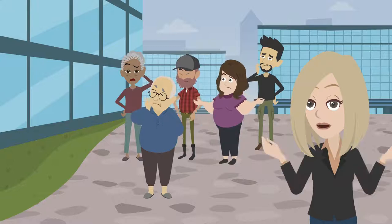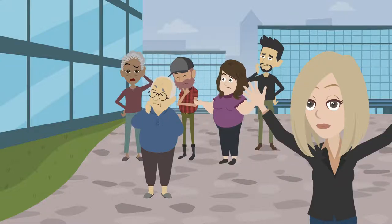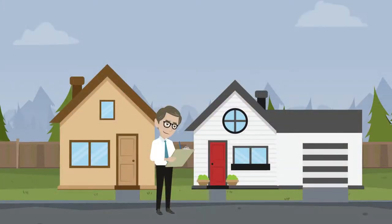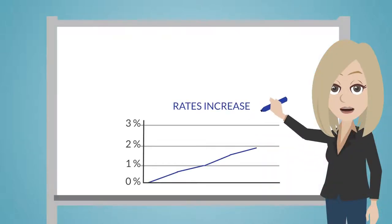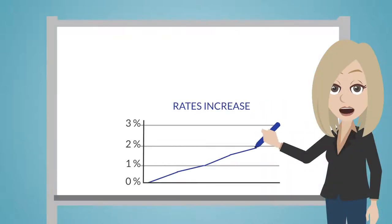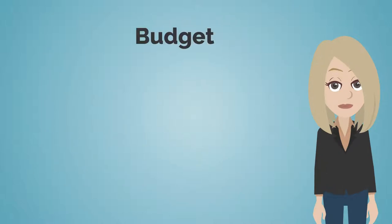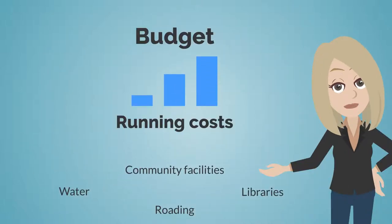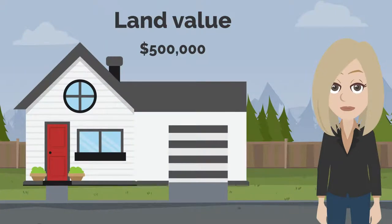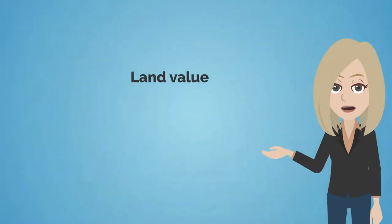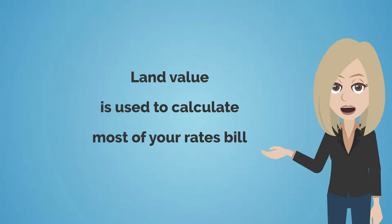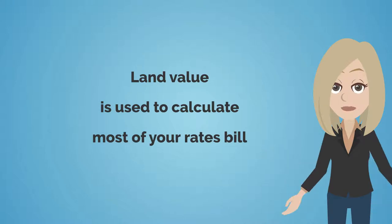A lot of people don't understand how rates work, especially what happens when properties are revalued. This video explains how it works. There are two reasons your rates go up: either when council needs more budget to pay for the services it delivers, or when your property values go up. It's the value of your land that is used to calculate most of your annual rates bill.